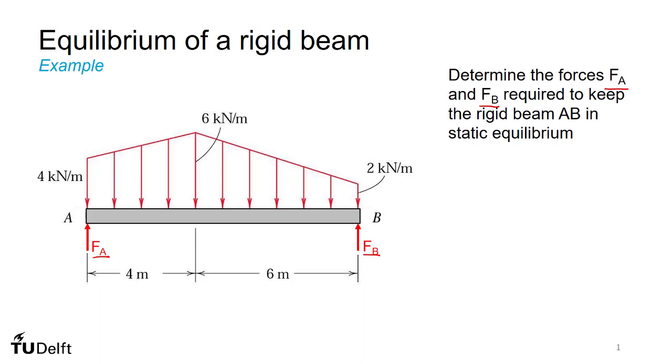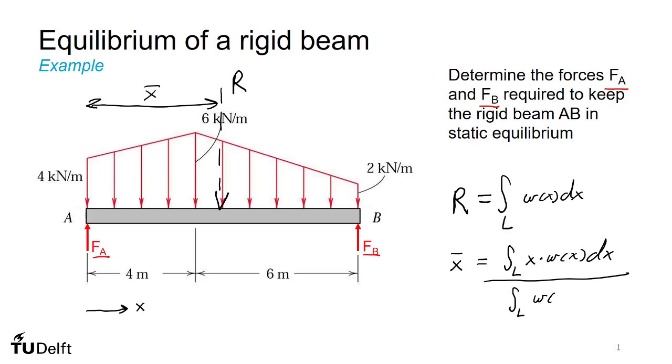Now earlier we looked at how we would actually calculate or deal with distributed loads, and what we would normally do is take that distributed load and replace it with a resultant force which we'll call R, which will have a location x-bar that will be statically equivalent to the distributed load. We did this using the equation R equals the integral over the length of the beam of the distributed load as a function of x dx, where x would be the distance along the beam. And then we would find the location x-bar as the integral over the length of x times the distributed load as a function of x dx divided by the total resultant load, which is the integral over the length of W dx.